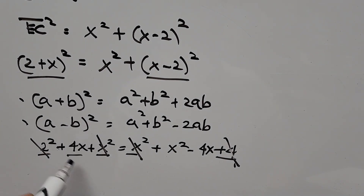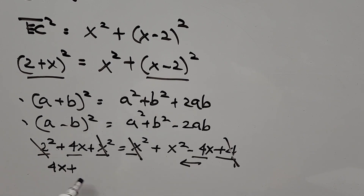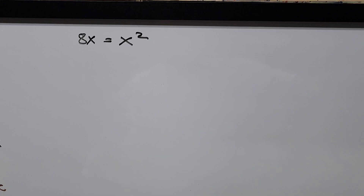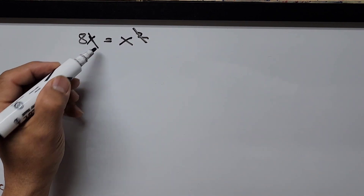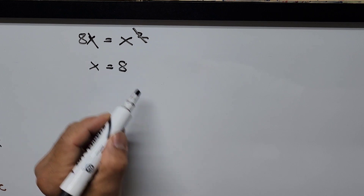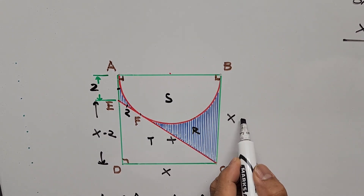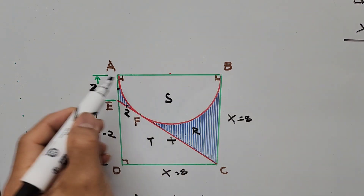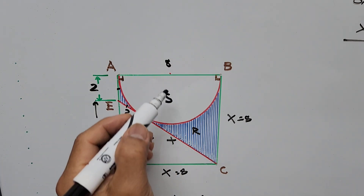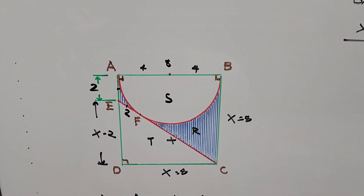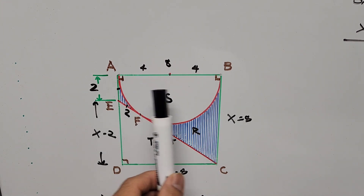Canceling x² and 4 from both sides, we have 4x on the left and −4x on the right. Moving −4x to the left: 4x + 4x = x², which gives 8x = x². Dividing both sides by x, we get x = 8 units. So the side of the square is 8, and since the semicircle spans the full side, its radius is 4 units.